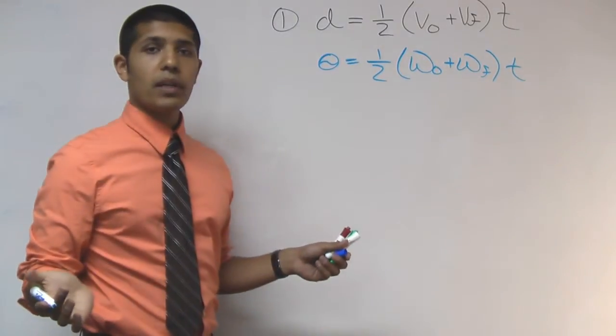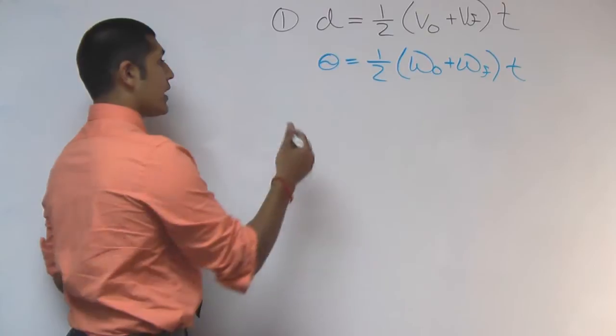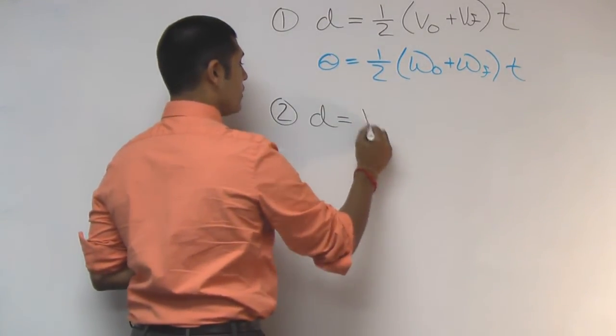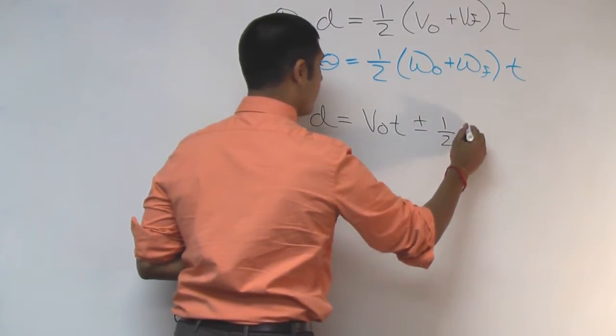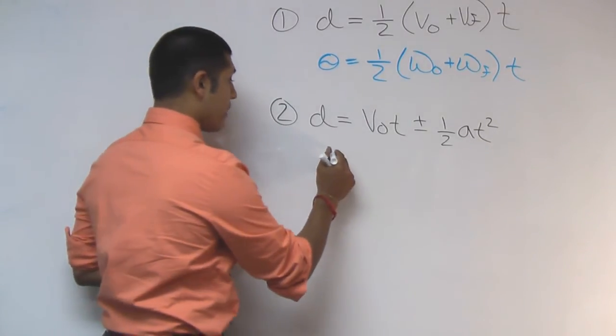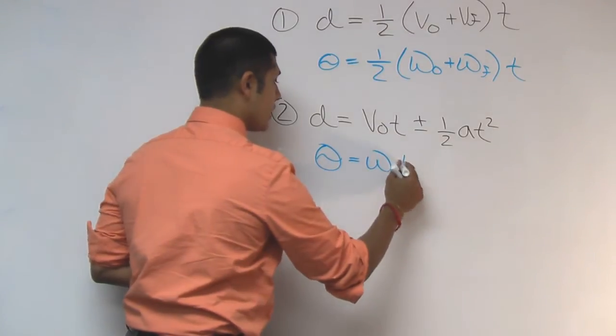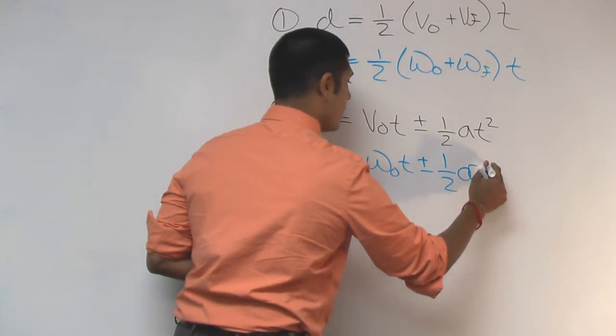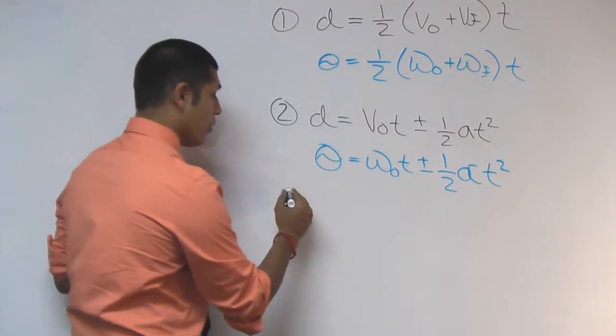All I did was replace the variables with my rotational variables. Second equation, displacement is equal to v initial times time plus or minus 1 half at squared. Rotationally, that becomes theta is equal to omega initial times time plus or minus 1 half alpha t squared.